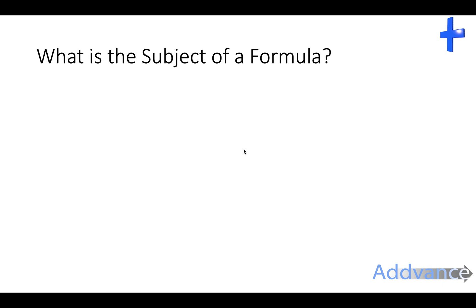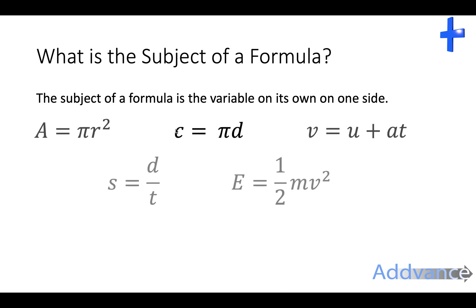So what is the subject of the formula? The subject of the formula is a variable on its own on one side. I have some examples here. So A equals pi r squared. A is the subject of the formula. You can see the subject of the formula in green here. They are the variables, the letters, on their own on one side of the equation.